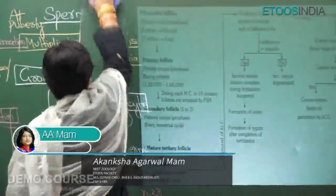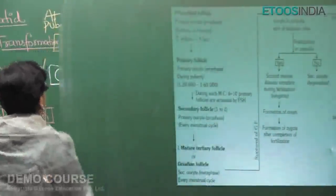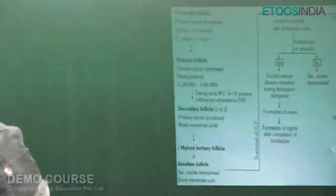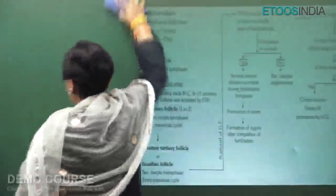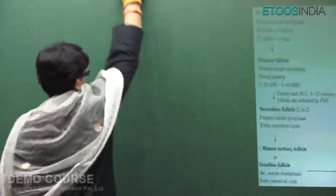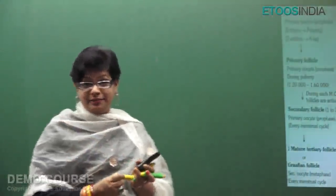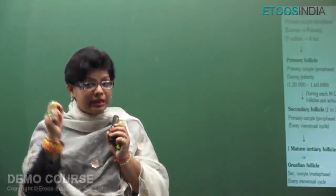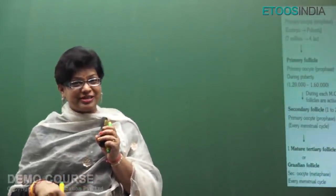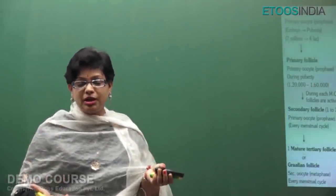Let's discuss what follicles are present in the ovary and how they are related to the stages of oogenesis or ovum formation. Ovum formation starts before birth — in uterine life, when a baby girl is inside her mother's womb, egg formation begins. By the 8th week of pregnancy, the gonad differentiates into ovaries in a female fetus.